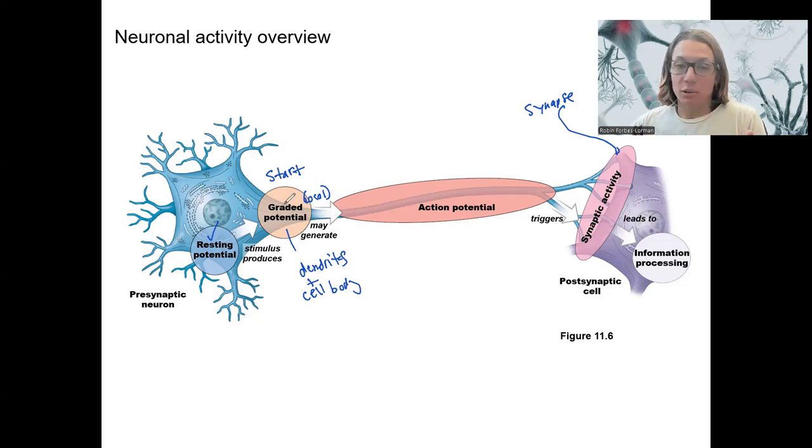Then we'll talk about how those generate, sometimes generate an action potential. So this is where we're starting. Two is our action potential. How does that work? And how is it propagated down the axon?